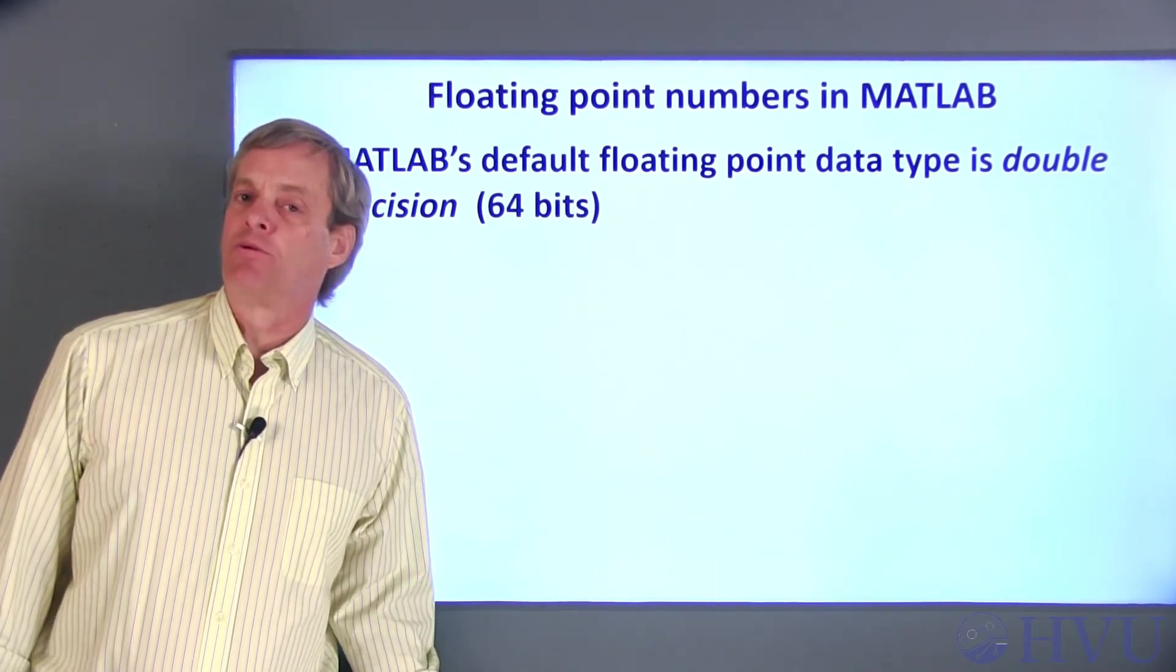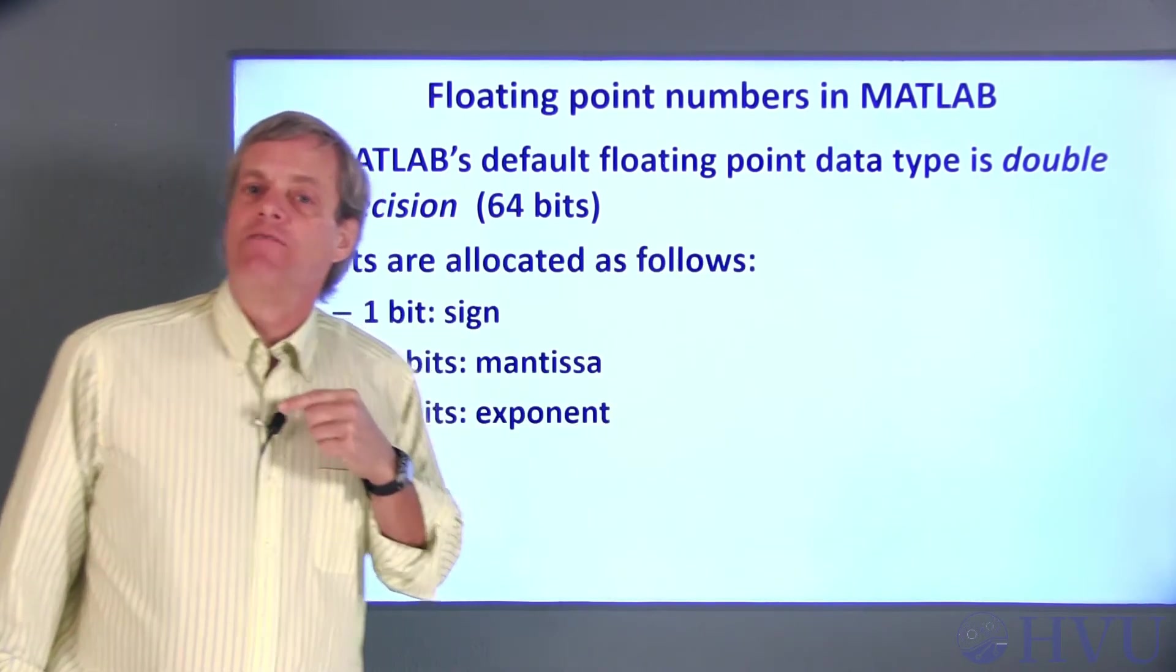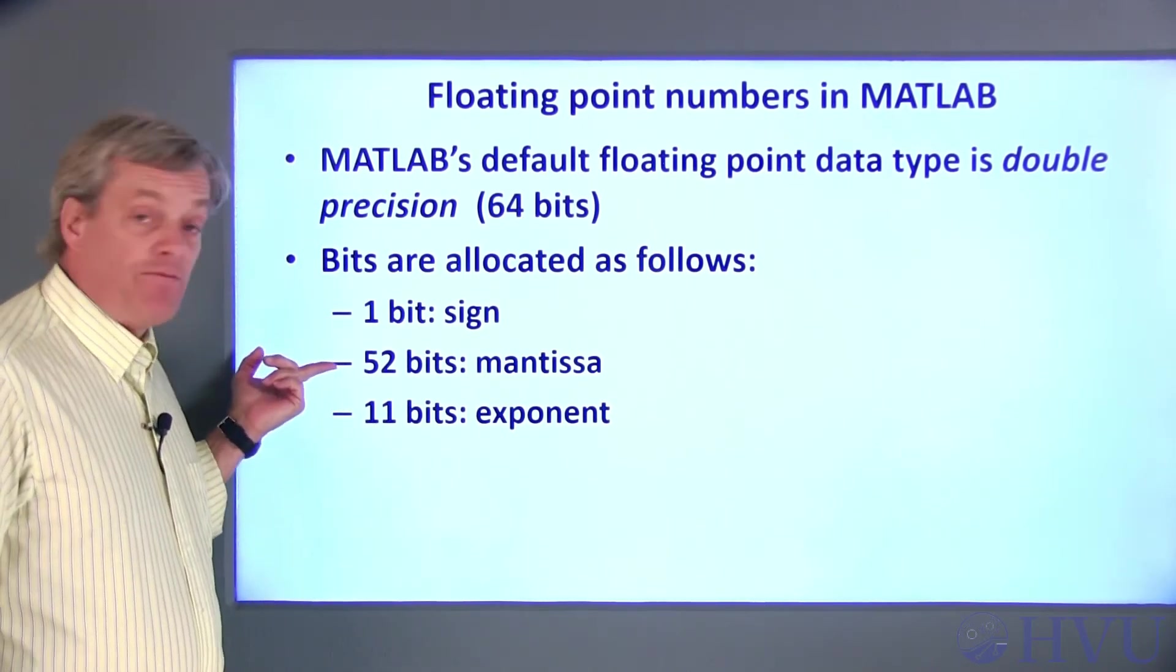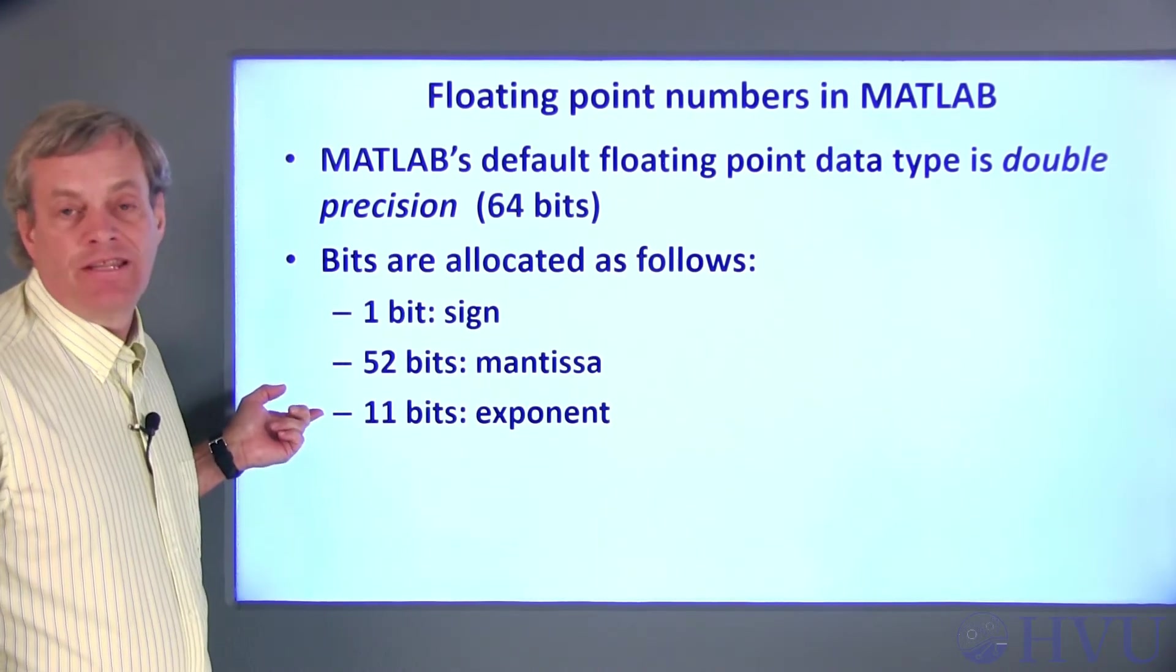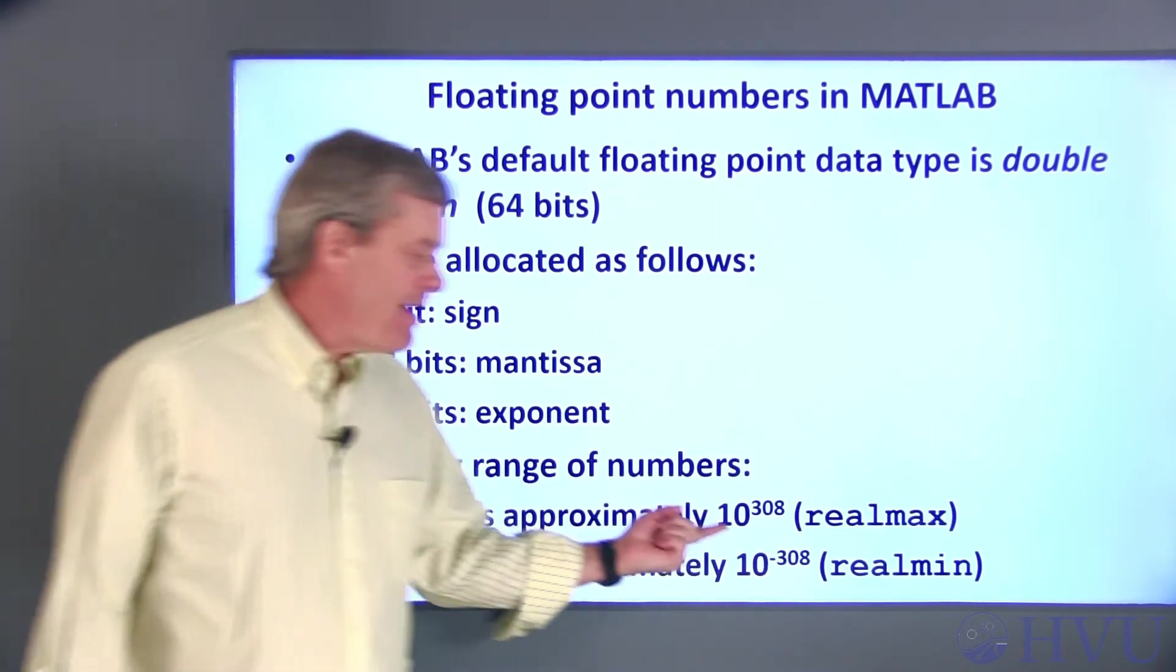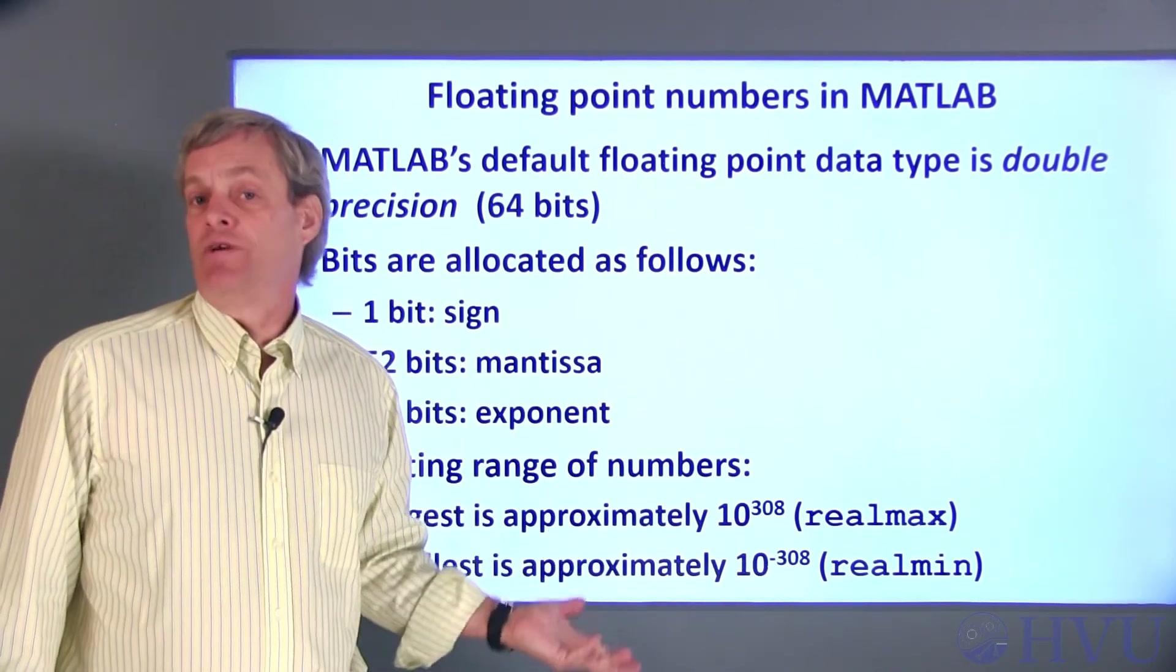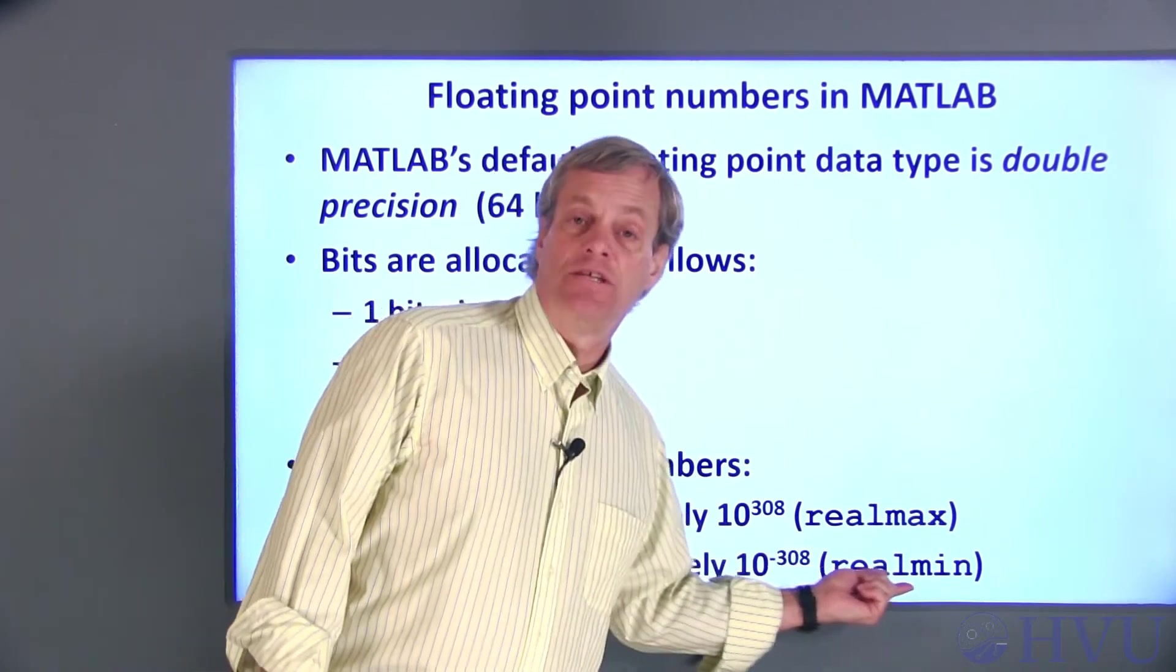If you don't assign a different data type to a number in MATLAB, it will create what's called a double precision number, which uses 64 bits to represent it. Of the 64 bits in a double precision number, 1 bit is used to specify the sign, the number can be either positive or negative, 52 bits are used to represent the mantissa, and 11 bits are used to represent the exponent. With this allocation, the largest number we can represent is about 10 to the 308th, and the smallest number is about 10 to the negative 308th. The exact values are available as predefined variables in MATLAB. The largest value is called realmax, and the smallest is realmin.